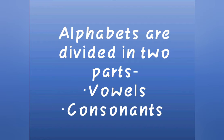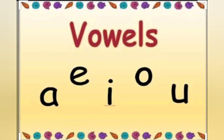Alphabets are divided into two parts: vowels and consonants. There are five vowels. They are A, E, I, O, and U. Vowels are special letters.